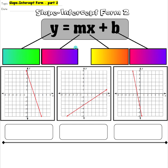Continuing our work with slope-intercept form, today we are going to be working in reverse from what we did in the previous lesson, where we were given a graph and wrote an equation in slope-intercept form. We are going to review a little bit of that and then move on to graphing the line given the equation in slope-intercept form — so reversing that process.